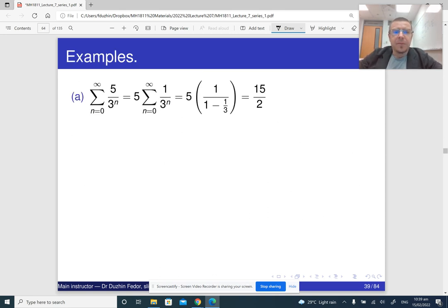Alright, so here is how we can apply it. Well, the first example is rather trivial because it is just a geometric series. But on the other hand, what we can do, we can take this 5, factor it out, and then when we look at whatever remains, we can apply the geometric series formula to it. So I don't think that it really makes it easier, though, but whatever.